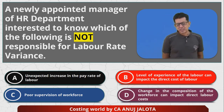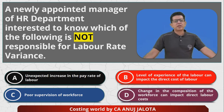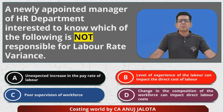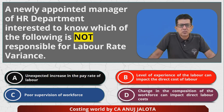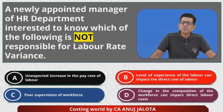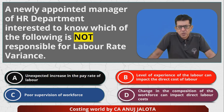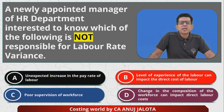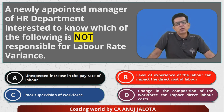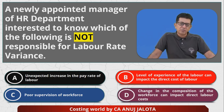Now, how do you compute labor rate variance? It is Standard Rate minus Actual Rate, multiplied by Actual Hours — to be very specific, actual hours paid for, not actual hours worked. So basically, rate variance occurs because standard rate is not equal to actual rate.